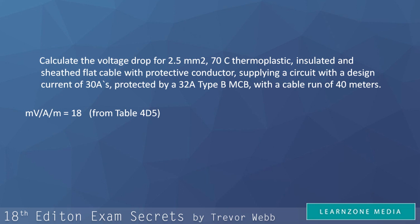Then we can see that the design current is 30 amps. This is our second value. Finally, we can see that the length of the run is 40 metres. And with this, we have everything we need to calculate the voltage drop required and to answer the question.